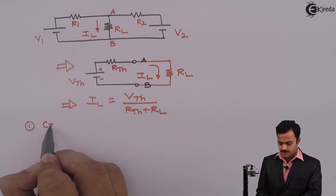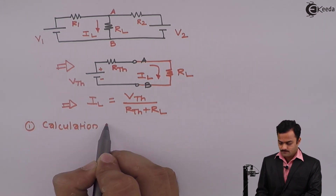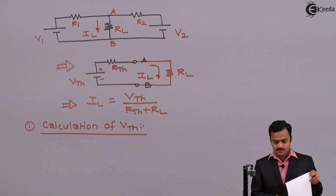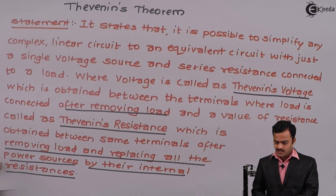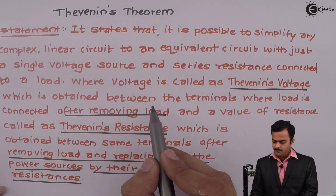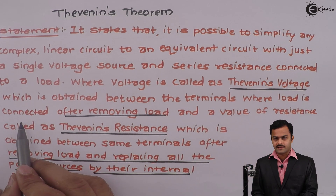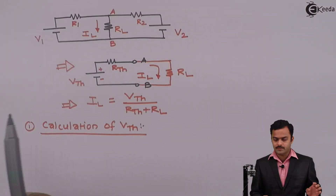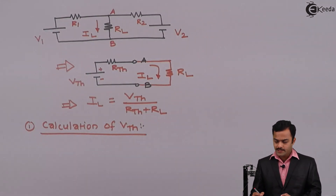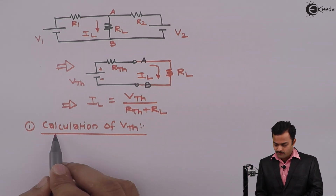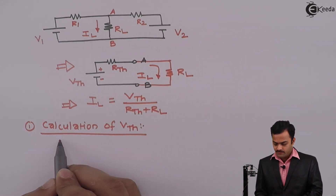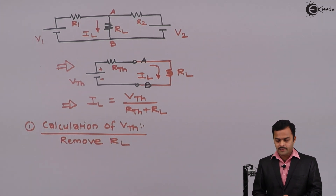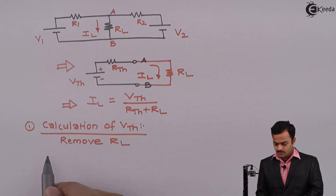First: calculation of Vth. Going back to the statement — Thevenin's voltage is obtained between the terminals where the load is connected, after removing the load. So the load is connected between points A and B. To get Vth, I need to remove RL. While calculating Vth, we have to remove RL from the original circuit.